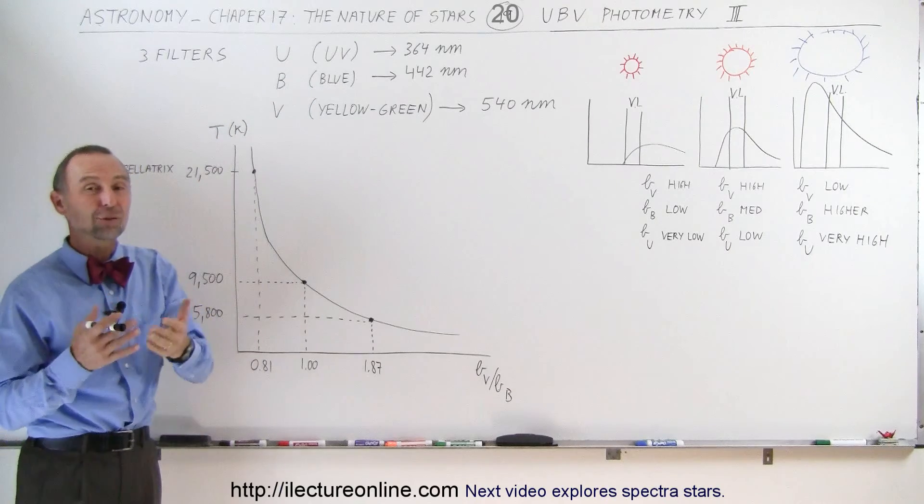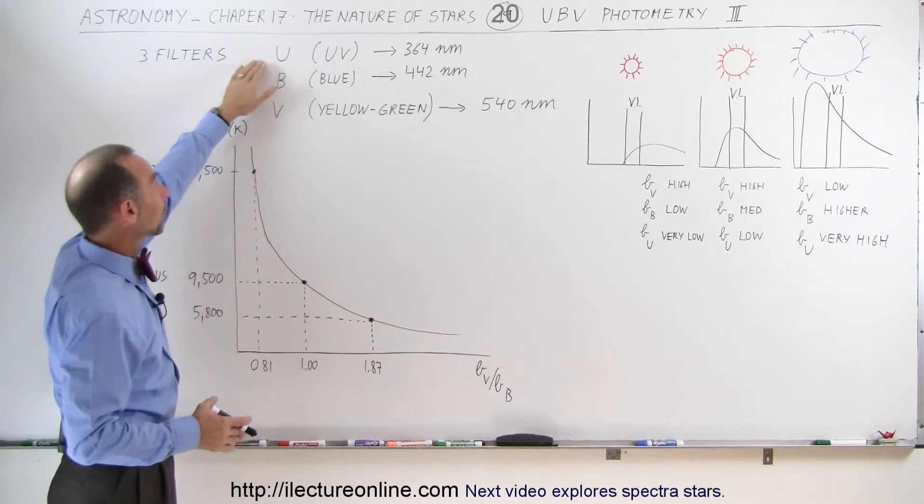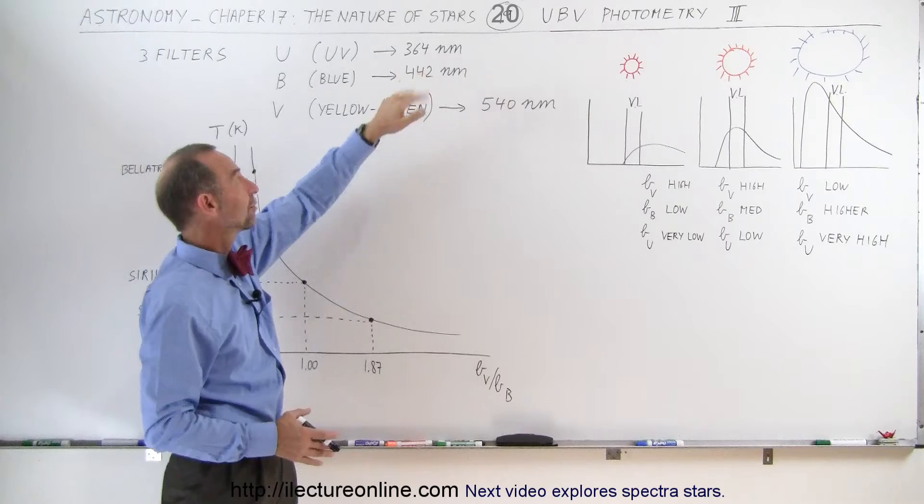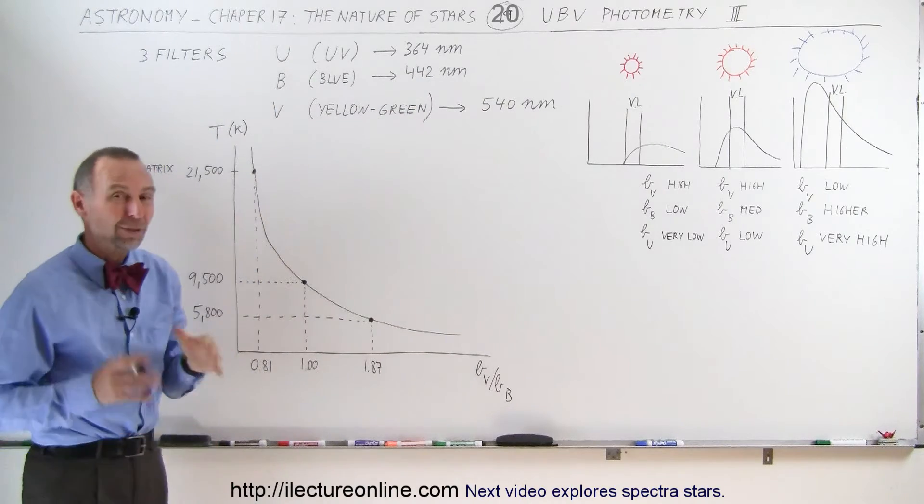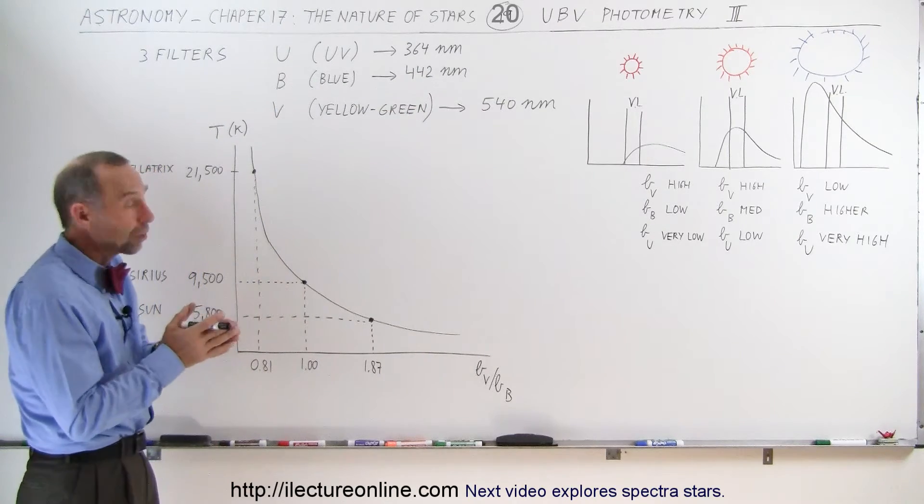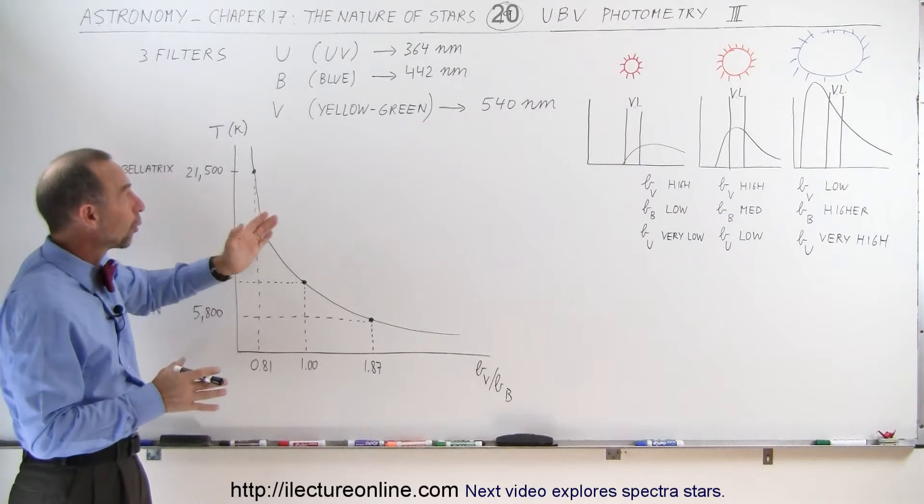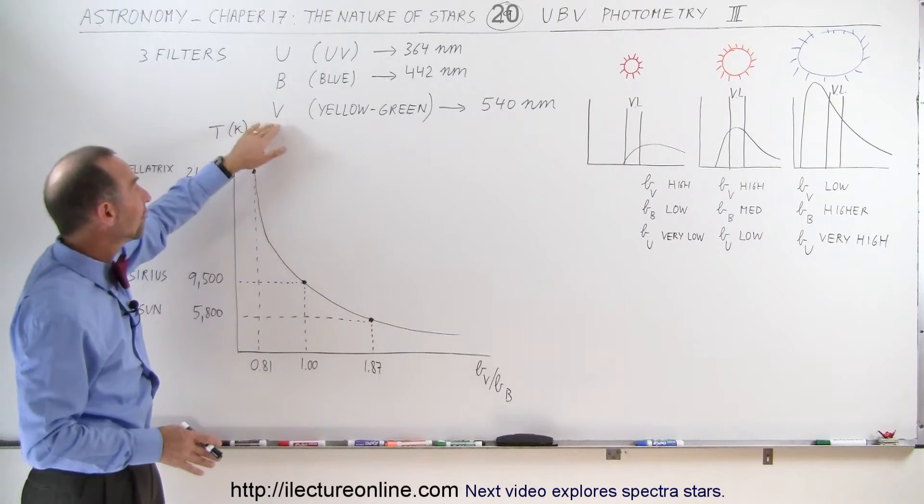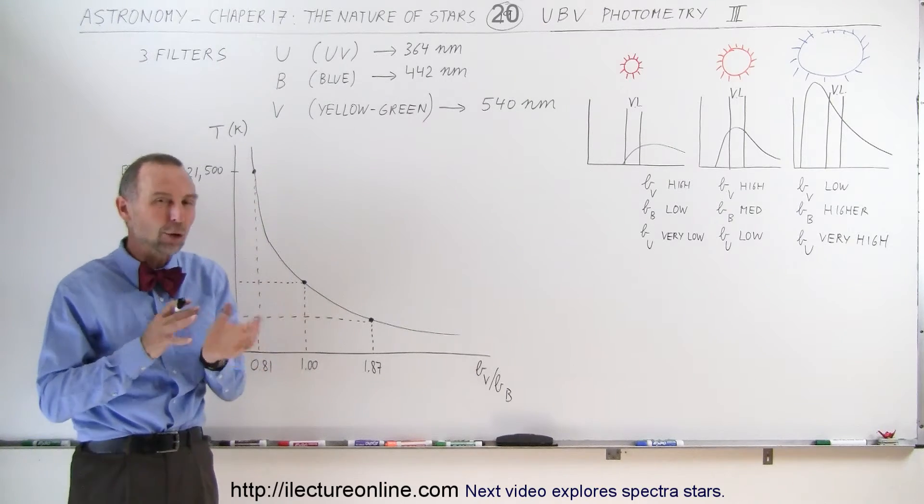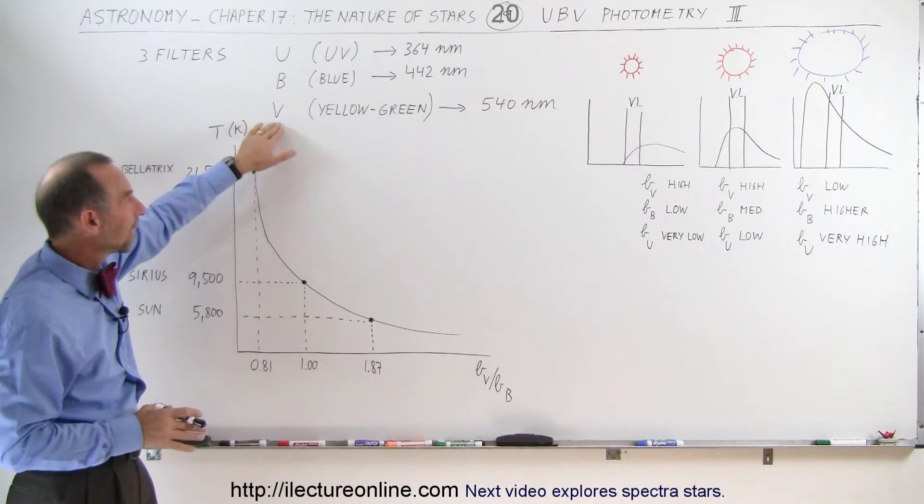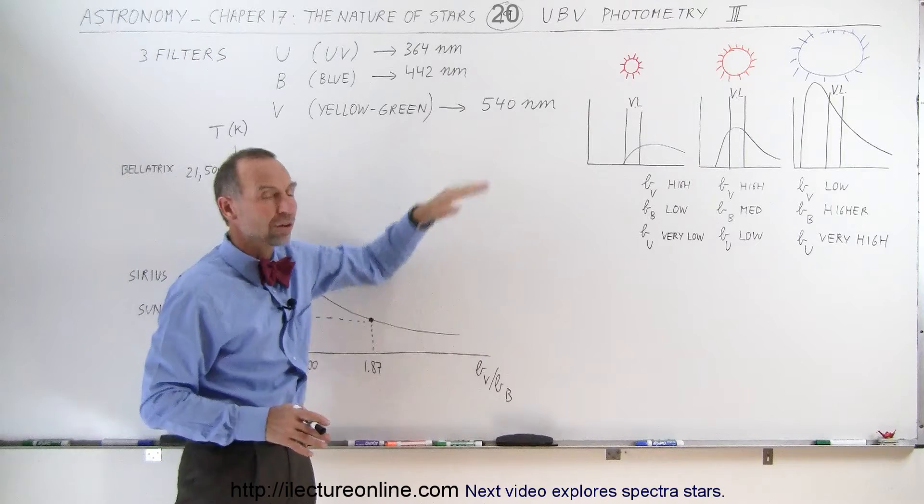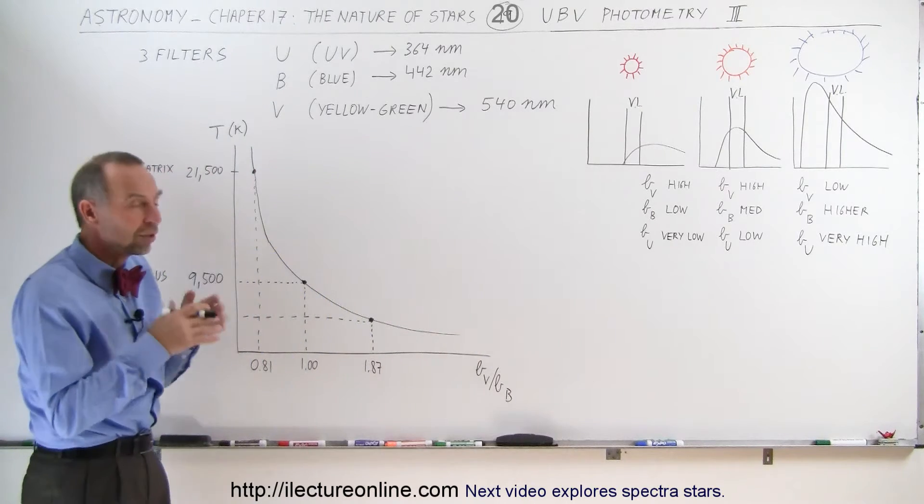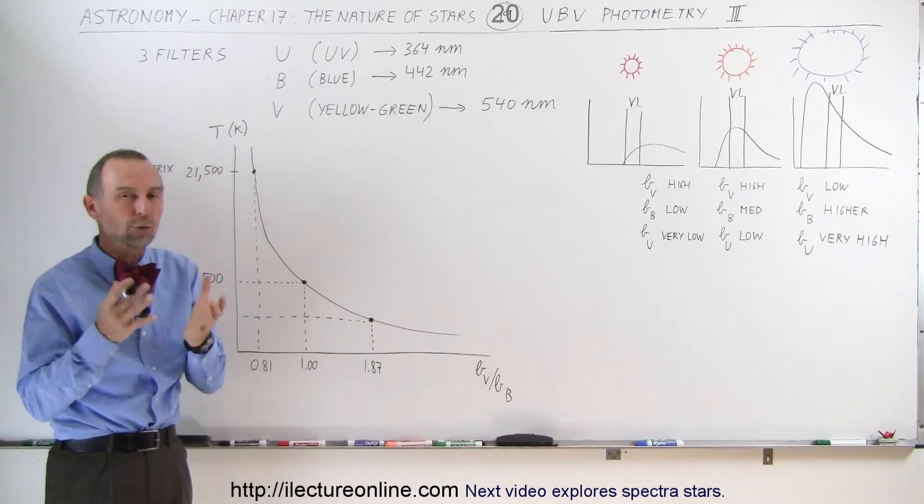A filter that predominates through what we call ultraviolet radiation centered around 364 nanometers. The blue filter predominates through blue light and not so much the rest of the visible spectrum or UV spectrum, centered around 442 nanometers. And the V stands for yellow green filter or visible light filter, predominately centered around 540 nanometers, which is the wavelength that our eyes are most sensitive to.